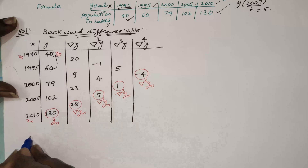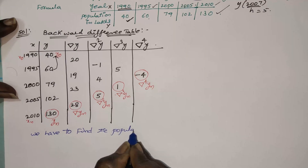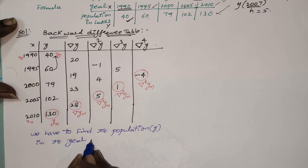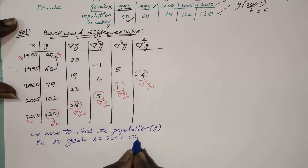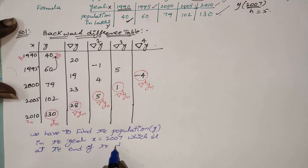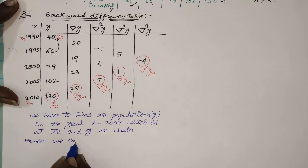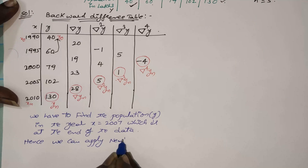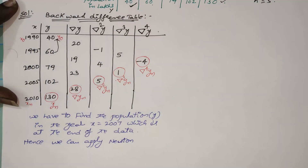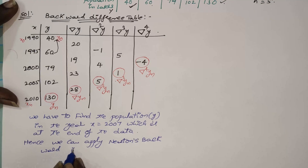Our aim is to find the population in the year x = 2007, which is at the end of the data. Hence we can apply Newton's backward interpolation formula. Note: if the given x values do not have equal spacing, then we have to apply Lagrangian interpolation formula instead. Newton's backward interpolation formula is suitable here.